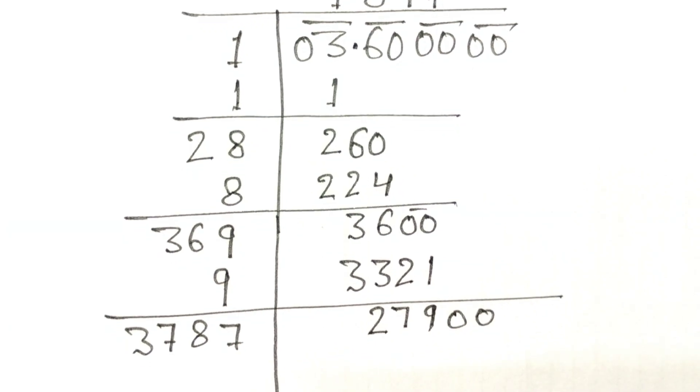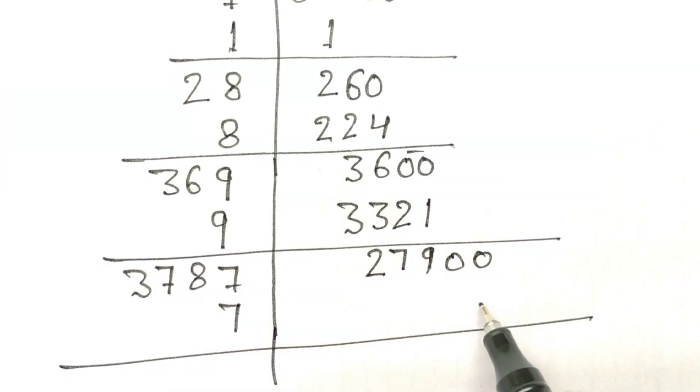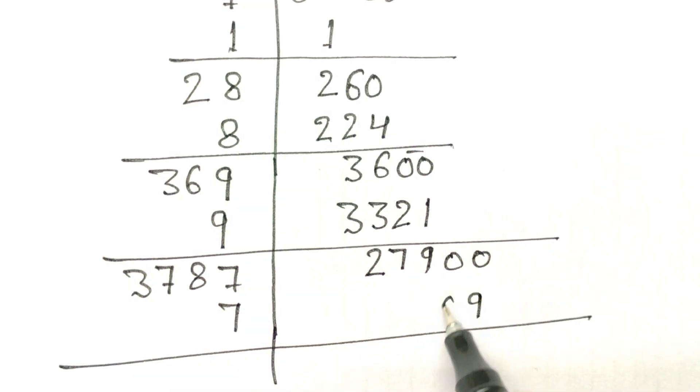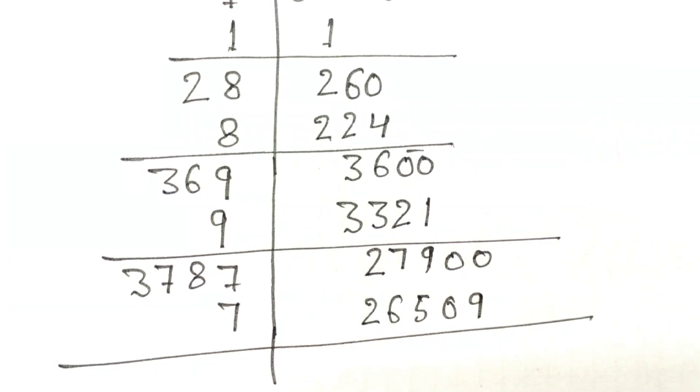Here also 7. This multiplied by 7. So we get 9, 0, 5, 6, 2.